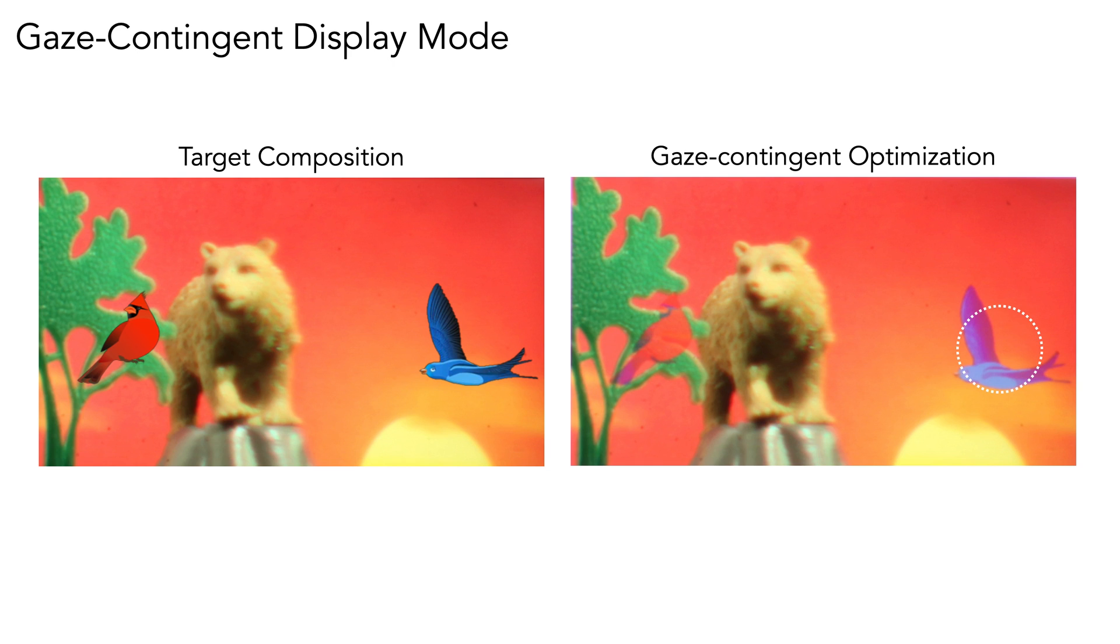So we do notice that the rendering of the red bird worsens, but it's likely that this would not be noticeable in the periphery. Similarly, we could do the same thing for the red bird. And again, that blue bird loses detail. But again, hopefully not noticeable in the periphery.